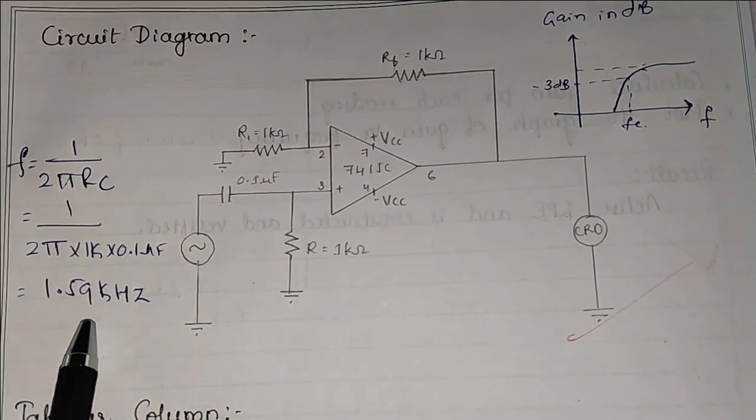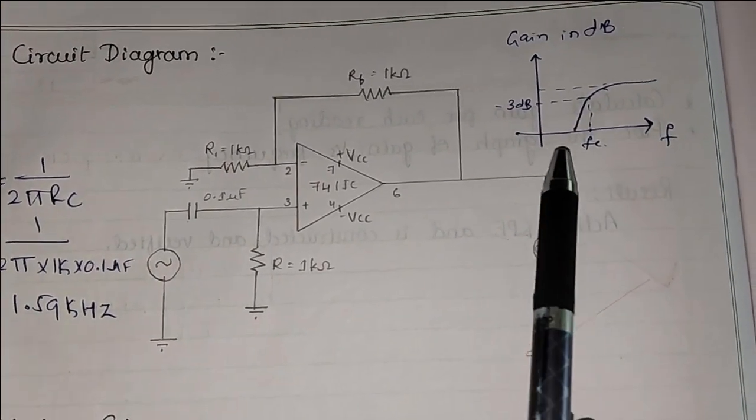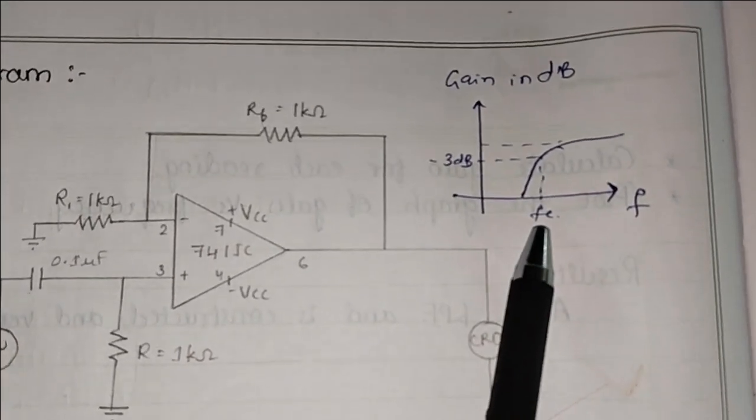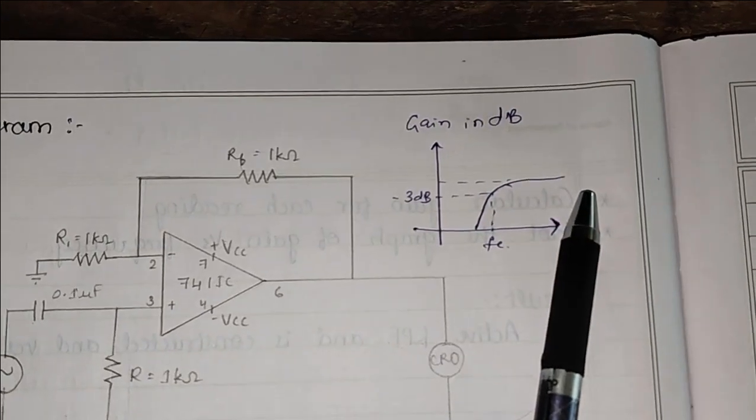That means till 1.59 kilohertz we don't get any signal as we can observe here in graph. After 1.59 kilohertz we will get the output voltage.